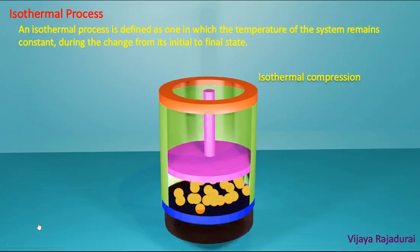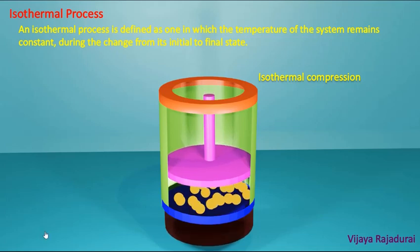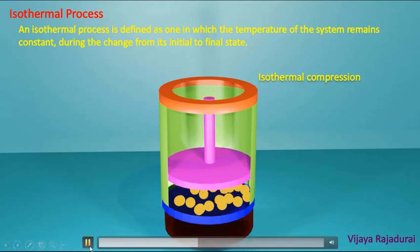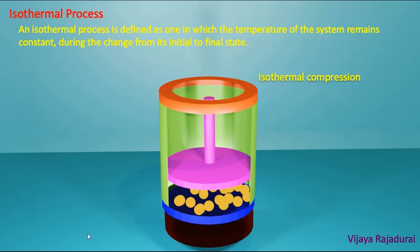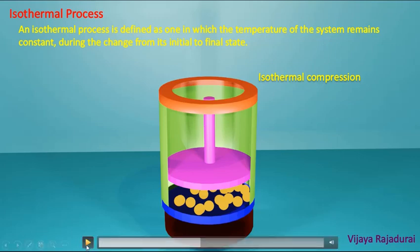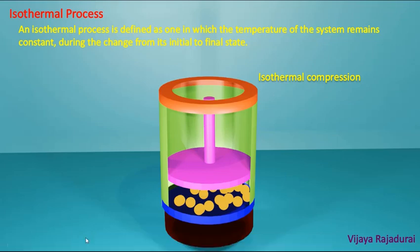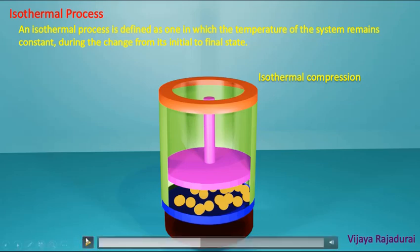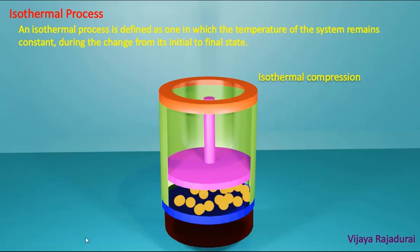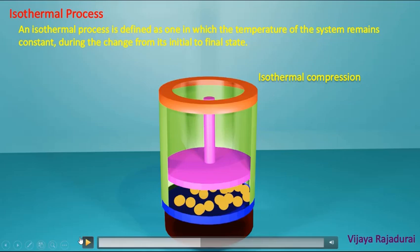When the piston moves in the downward direction, the volume of the gas molecules decreases. At the same time, the pressure and temperature increase. But in this isothermal process, the temperature has to be maintained as constant, so the increased temperature is transferred to the surrounding through the conducting material. Due to the transfer of heat from the system to the surrounding, the constant temperature is maintained in the system from initial state to final state.